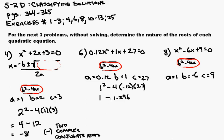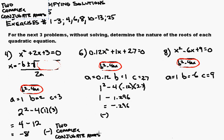This is equal to negative 0.296. Again, the discriminant is negative. Therefore, I have two complex conjugate roots.